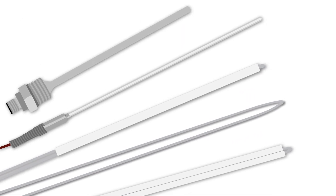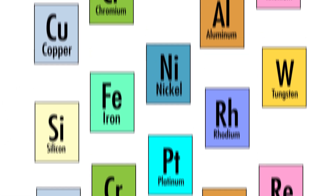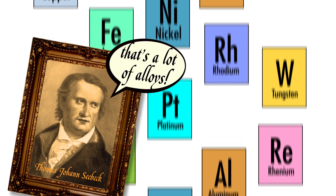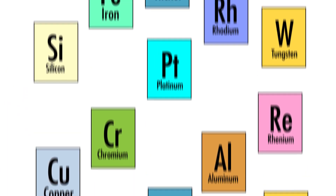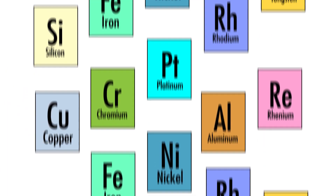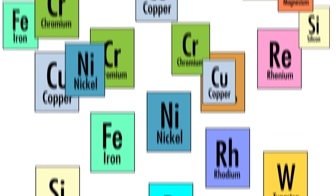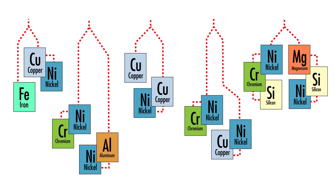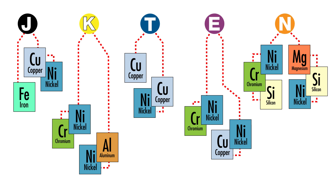Today, thermocouples are available in many different combinations of alloys and calibrations. A thermocouple's alloy combination, which in turn dictates its temperature range, is designated by a letter code, the most common being the base metal thermocouples known as types J, K, T, E, and N.